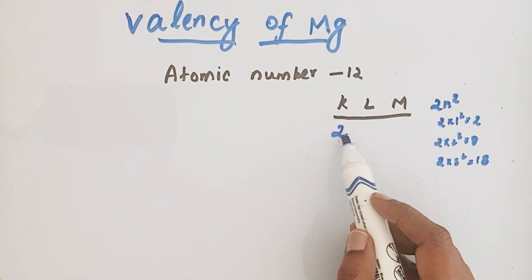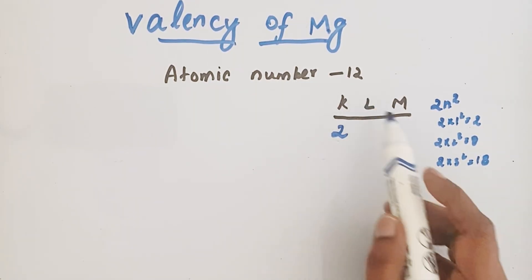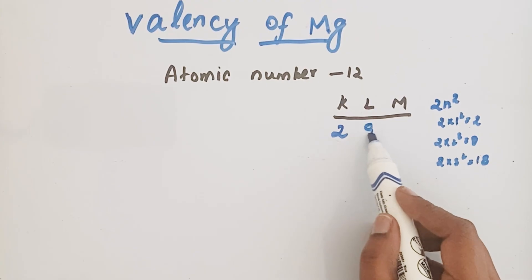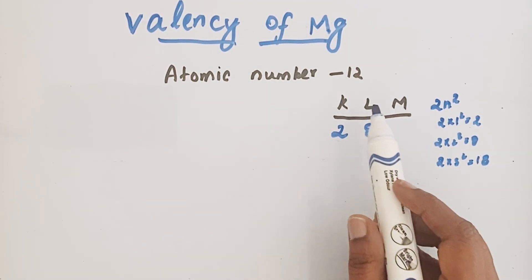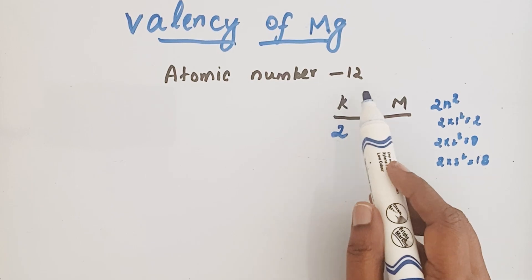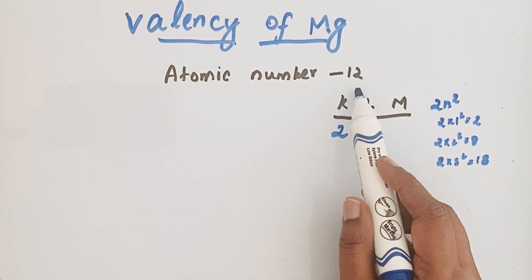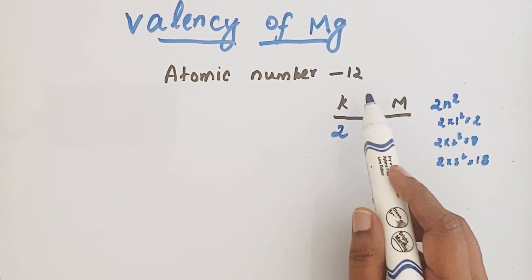First the electrons enter into K shell, then after that 8 electrons enter into L shell. Now we have the remaining two electrons because for the neutral atom the atomic number, that means the number of protons, is equal to number of electrons.